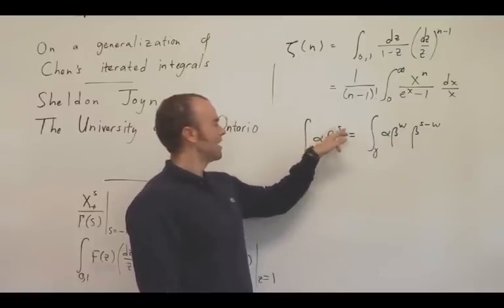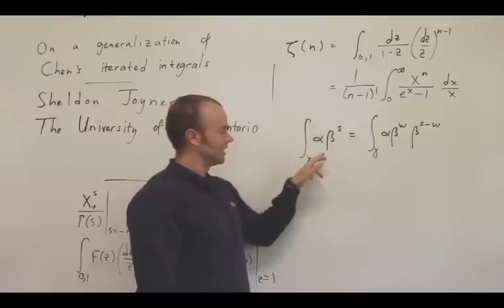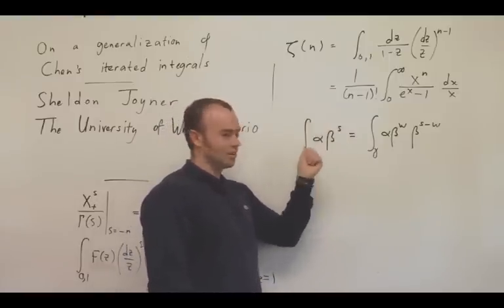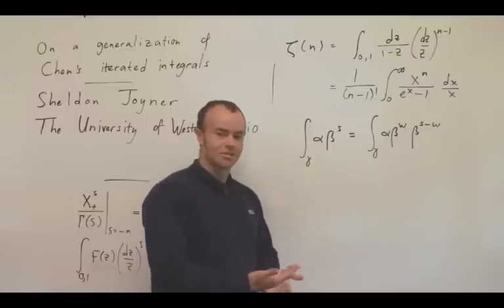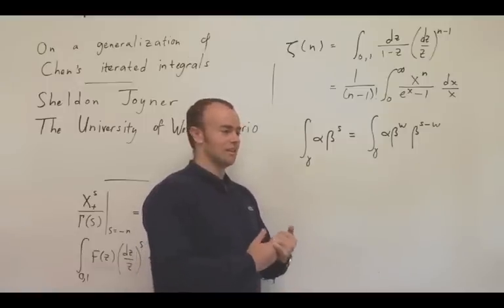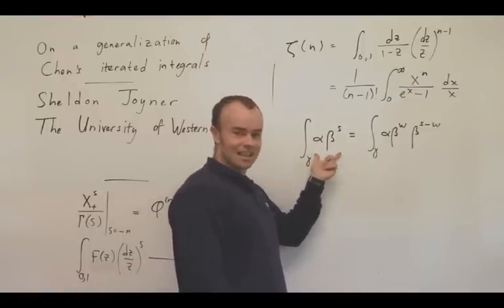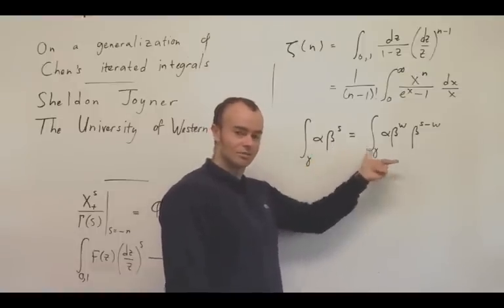We can arrive at a definition of such an object in a very general context, namely if you have a complex manifold, alpha and beta holomorphic one forms, and s chosen suitably that everything converges, then we can define such a gadget which again satisfies such an iterative property.